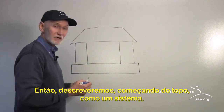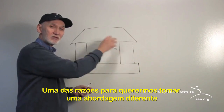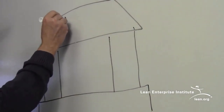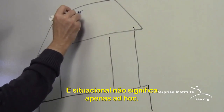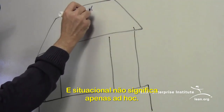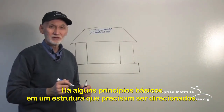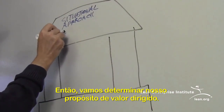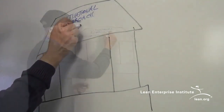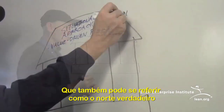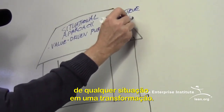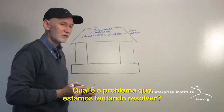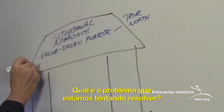Starting at the top with the goals of the system: one reason we want to take a slightly different approach is because every situation that calls for transformation is unique, so we need a situational approach. Situational doesn't mean ad hoc — there are basic principles and a framework that drive it. This is a value-driven approach, so we determine our value-driven purpose, which you could also refer to as the true north of any transformation, addressed with the simple question: what problem is it that we're trying to solve?